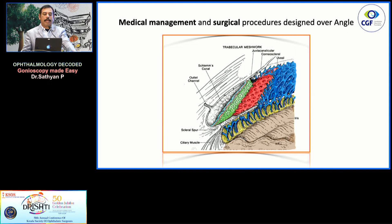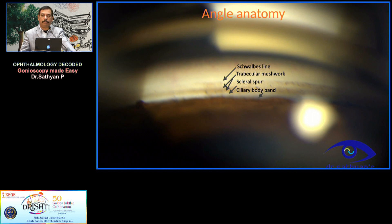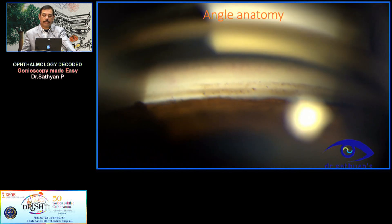When you're looking at the anterior chamber angle, most of the time it is for medical management and for surgical procedures. The anterior chamber angle is critical. Looking at the anatomy of the anterior chamber angle from anterior to posterior, you have the Schwalbe's line, then the non-pigmented trabecular meshwork, then the pigmented trabecular meshwork, then the scleral spur, then the ciliary body band. If you don't know this, there is no point in doing gonioscopy. This is very essential and critical.